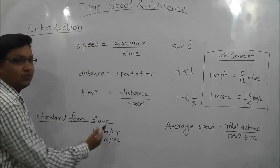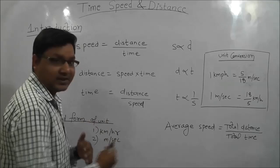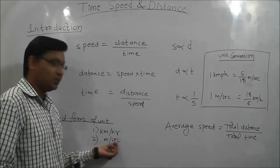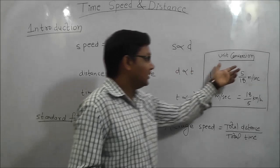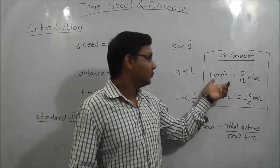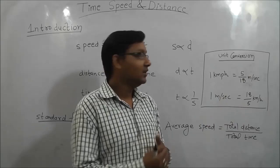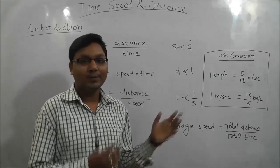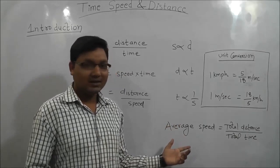The standard unit of speed is kilometer per hour — kilometer should come with hour. Another standard unit is meter per second — meter should come with second. For unit conversion: 1 km per hour equals 5/18 meter per second. Conversely, 1 meter per second equals 18/5 kilometer per hour. Note this down as we will use it in solving questions.